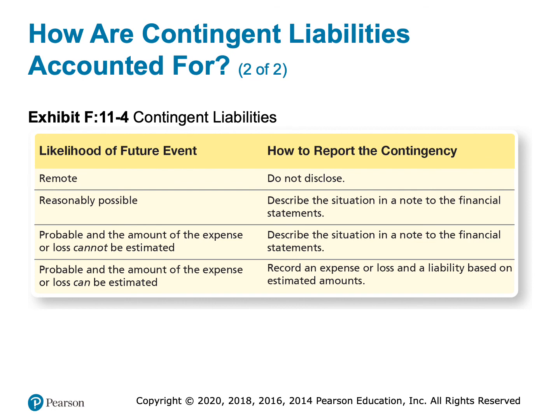If it comes back that we won, we can back those off of our books and take them off. But it's so much better to go in and say we've already recorded this liability — we're hoping we win — but just to be extra cautious, we're going to go ahead and record it now and let you know. And then if it turns out that we win, we'll take it off our books.